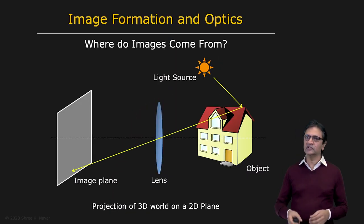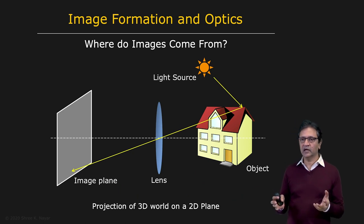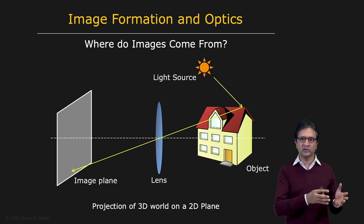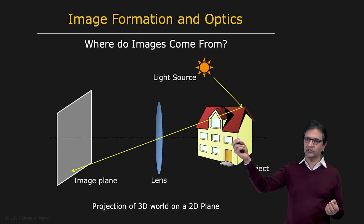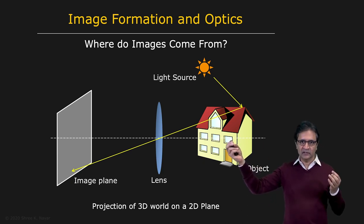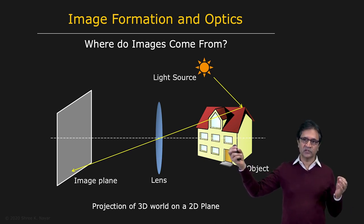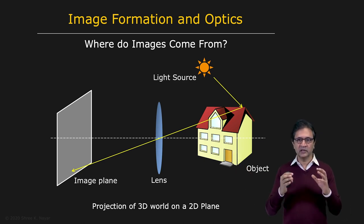Let's take a look at the topics covered in these lectures. We're going to start with image formation and optics — the mapping of a three-dimensional world to a two-dimensional plane using a lens. Where do images come from? What is the relationship between the position of a point in 3D and its projection in its 2D image? And how does the brightness of a point in 3D relate to its brightness in the image? That's the creation of an optical image.